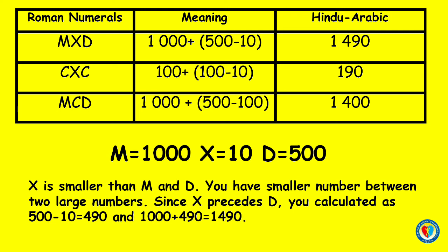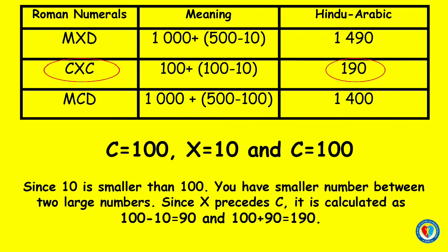Let's take a look at another example. CXC is equal to 190. C is equal to 100, X is equal to 10, and C is equal to 100. Since 10 is smaller than 100, you have a smaller number between two large numbers. Since X precedes C, it is calculated as 100 minus 10 equals 90, and 100 plus 90 equals 190.